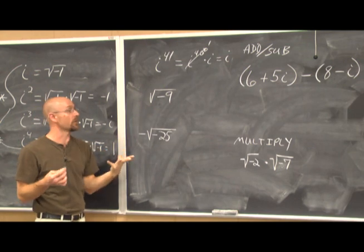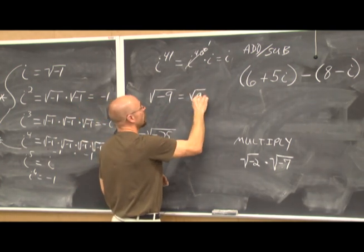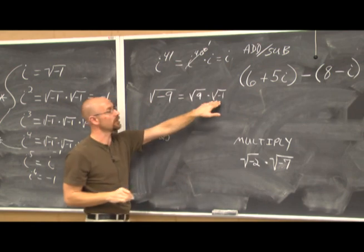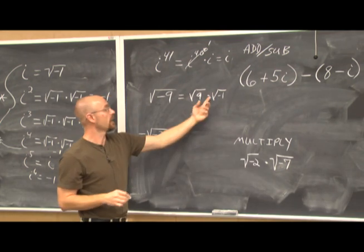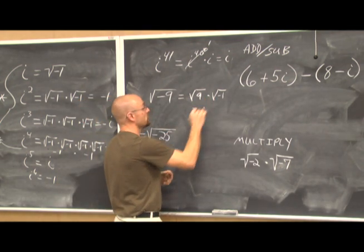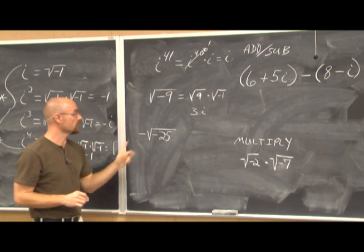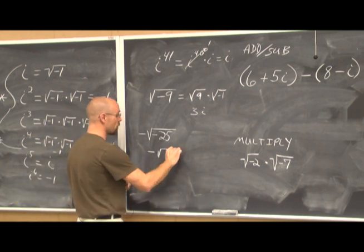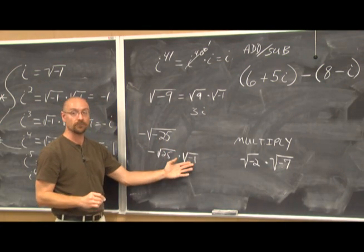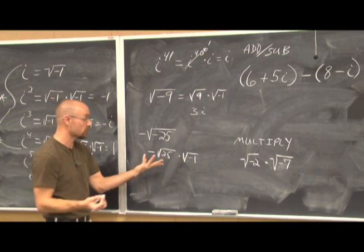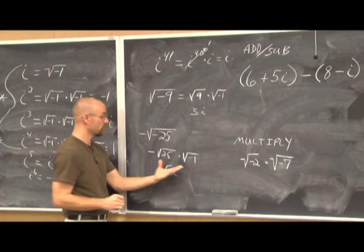We can always factor out a negative 1 from under a radical. The square root of negative 9 equals the square root of 9 times the square root of negative 1 — our definition of i. The square root of 9 is 3, and the square root of negative 1 is i, giving 3i, a pure imaginary number. Similarly, the negative square root of negative 25 factors to negative 5 times i, giving negative 5i.